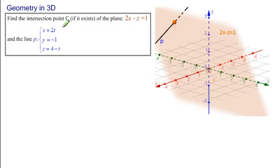The problem says find the intersection point C, if it exists, of the plane 2x minus z equals 1 and the line P given in parametric form.